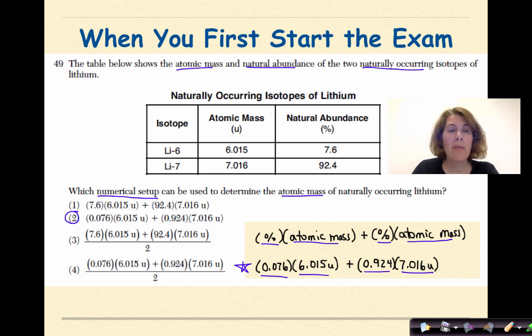Notice again here they're asking for a numerical setup, so they're not expecting you to calculate an answer. But this formula right here, natural abundance times atomic mass, is not in your reference table, and that is something that you need to know. That's why we say doing a brain dump ahead of time to make sure that you remember this particular formula might be a good idea.